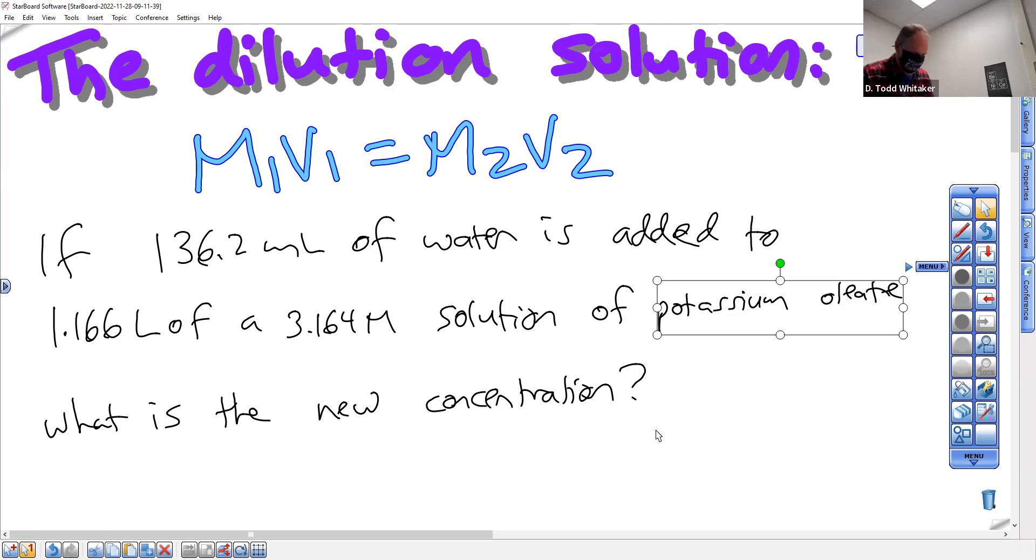So I'm writing down everything I have here. I like to cross off big M, replace with moles per liter. Which variable is that? 3.164 mole per liter. You've got four variables at the top of the screen. Which of the four is this one? M1. That's our original concentration.